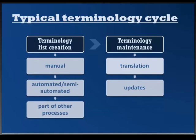A terminology list can also be created during the authoring process in an automated or semi-automated way, and this is the ideal scenario. Unfortunately, those tools are pretty expensive and require well-controlled environments to give good results. Once you get the list, you have to maintain it — you start translating terms to ensure consistent use in translated documents, or you may find that some terms have changed and need updating, but that's a separate cycle.